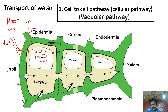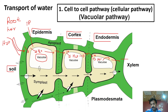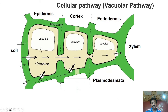پھر یہ پانی vacuole کی tonoplast کو cross کرے گا، پھر cytoplasm کو، پھر دوسرے cell میں جانے کے لیے cell wall، پھر cell membrane، پھر cytoplasm سے ہوتا ہوا tonoplast کو cross کر کے دوسرے cell کے vacuole میں چلا جائے گا۔ یہ عمل cortex اور endodermis سے گزرتے ہوئے دہراتا رہے گا یہاں تک کہ پانی xylem تک پہنچے — یہ ہے vacuolar pathway جس میں ہر cell کے اندر vacuole کو cross کرنا ضروری ہوتا ہے۔